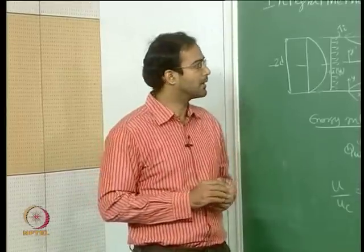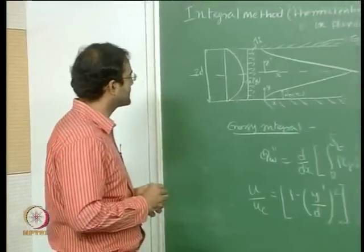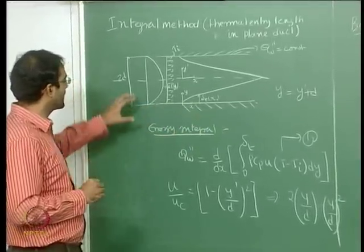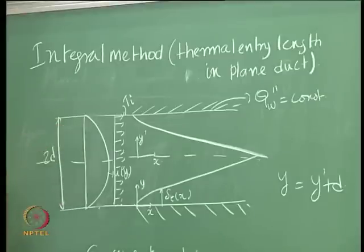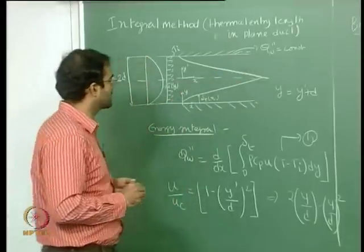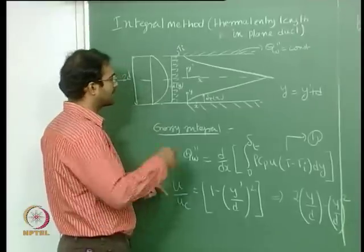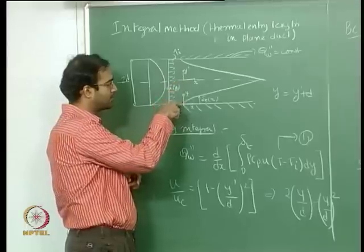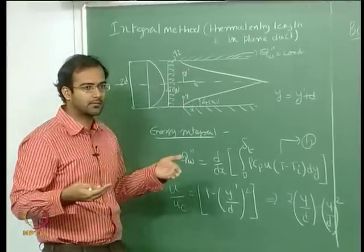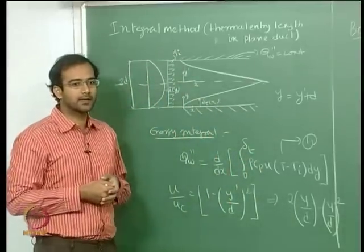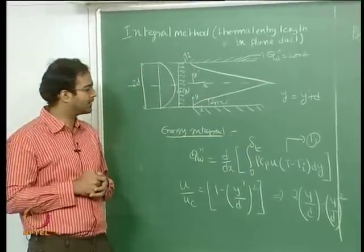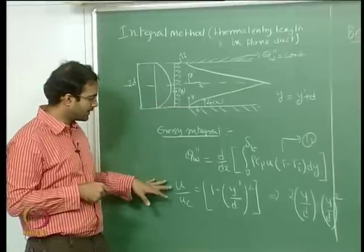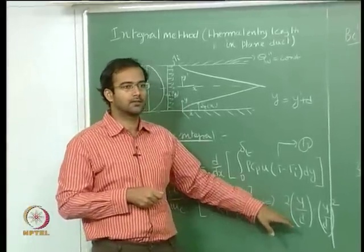That is basically flow between two parallel plates. We take up one such example where we have a thermally developing region — that is region two — where we have the fully developed velocity profile, the parabolic velocity profile, and we have applied the constant wall flux boundary condition. When you write the velocity profile, you use a coordinate system aligned to the center of the channel, so we transform to a coordinate system starting from the plate, since the integral method is integrated from the plate till the edge of the boundary layer.